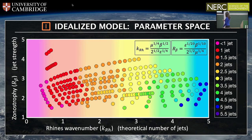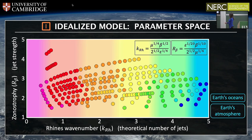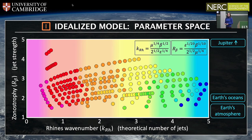Let's see how this parameter space corresponds to the naturally existing jets in the solar system. In the Earth's atmosphere, the zonostrophy is estimated to be somewhere between one and two — very weak jets. In the Earth's oceans, it's around about two — slightly stronger. However, on the gaseous giant planets like Jupiter, the zonostrophy is much higher: values start at around about five but go upwards to ten and possibly higher. So these are much stronger jets on those planets.